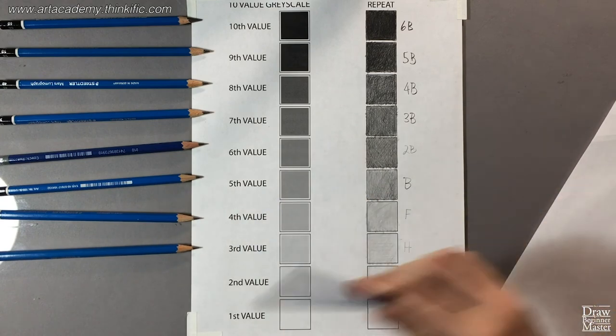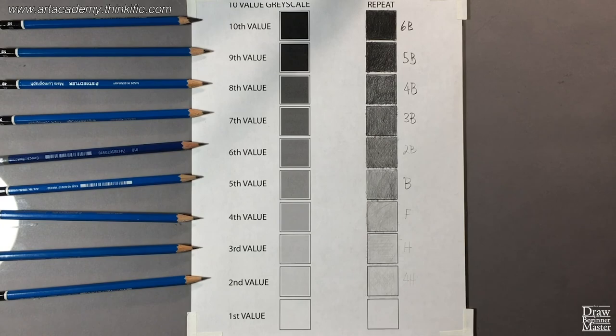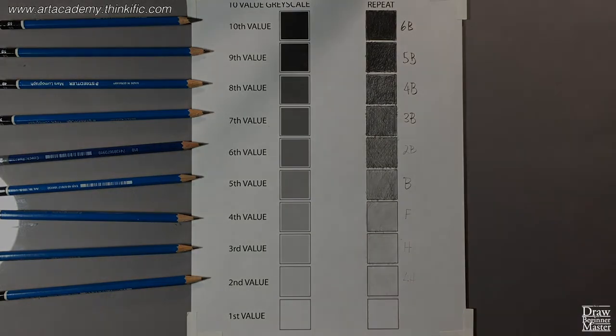And you just created a 10 value grayscale. Now that you've gotten acquainted with the different leads in your pencil set, you're ready to learn the mechanics of shading. Be sure to keep this worksheet, because in the next few lessons, I'll show you how to use it to help you master shading and control line weight.